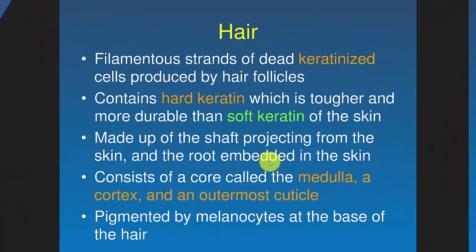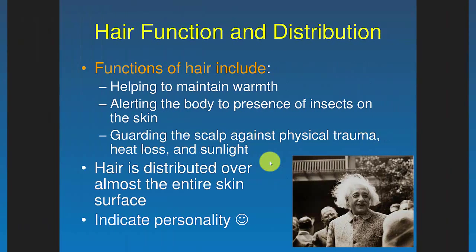Hair is made of keratinized cells. There are two different types of keratin: hard keratin, which is tougher and makes up hair, and soft keratin, which keratinizes your skin. As for the functions of hair, you have a lot of capillary beds in the scalp, so hair is actually protective — it maintains warmth, prevents physical trauma, and might alert you to the presence of insects so they can't get to those capillaries.